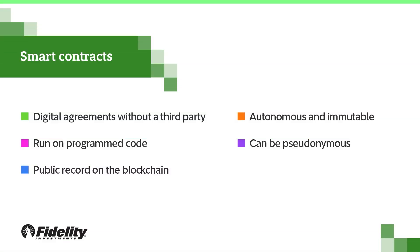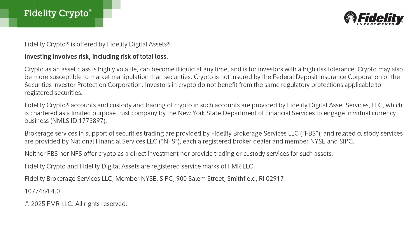Here's a quick recap. Smart contracts are digital agreements without a third party. They run on programmed code and are public record on the blockchain. They execute automatically, cannot be changed, and can protect your identity. Are you feeling more crypto confident? Explore crypto right here at Fidelity and visit fidelity.com/learn-crypto for more.